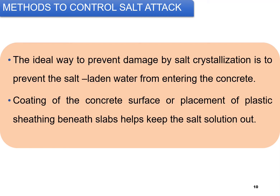The second method is to have a coating on the concrete surface or placement of plastic sheathing beneath slabs, which will help restrict salt solutions from penetrating by capillary action through the ground. So the two preventive methods are: first, improve the quality of the concrete to prevent salt water from entering by minimizing voids and improving permeability; and second, apply a coating on top of the concrete surface or wrap it with plastic sheathing beneath the slab.